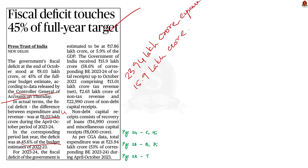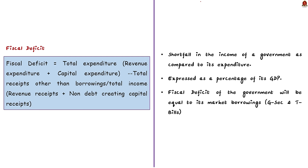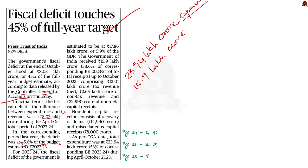A fiscal deficit is a shortfall in the income of a government as compared to its expenditure — the difference between total income and total expenditure. Normally, the fiscal deficit of a country is expressed as a percentage of its GDP. The government's total expenditure of 23.94 lakh crore rupees compared to receipts of just 15.9 lakh crore rupees is a very apt example of fiscal deficit — expenditure is much higher than receipts.